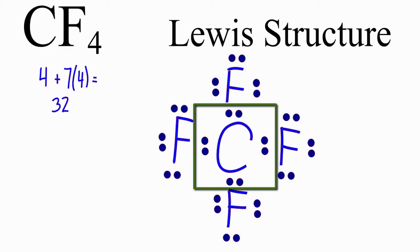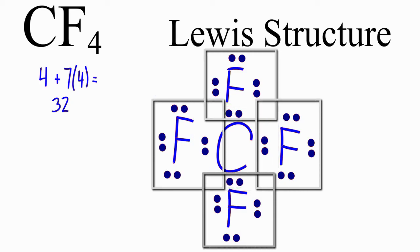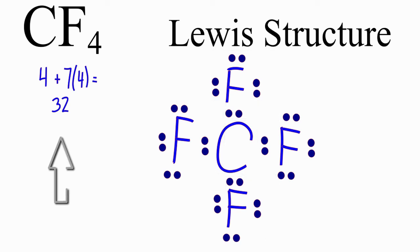So carbon has 8 valence electrons. And each fluorine has 8 valence electrons. And if we count them all up, we'll see we've used 32 valence electrons. So we've satisfied the octet for each element in this Lewis structure. And we've used all 32 valence electrons.